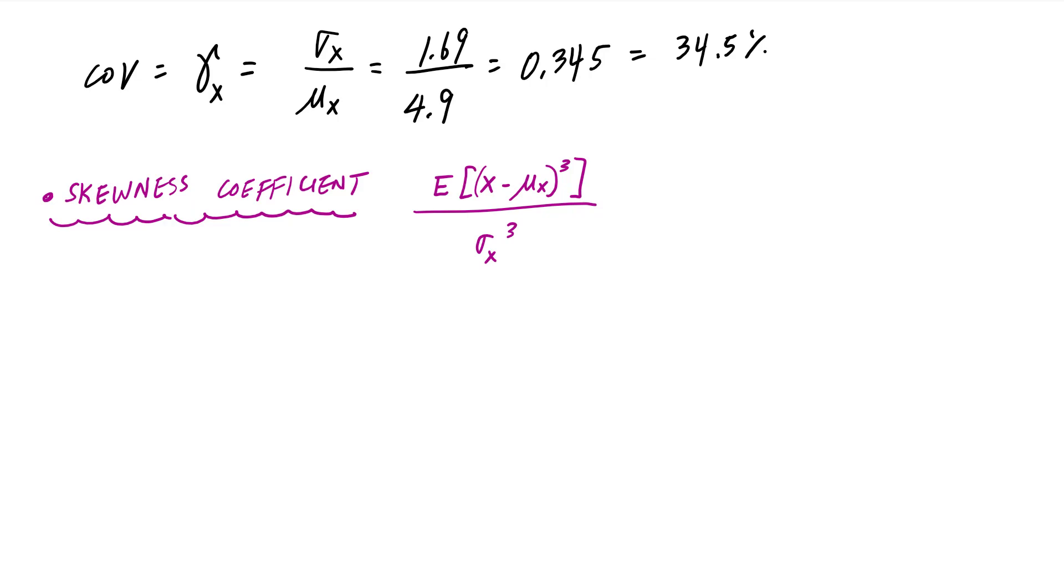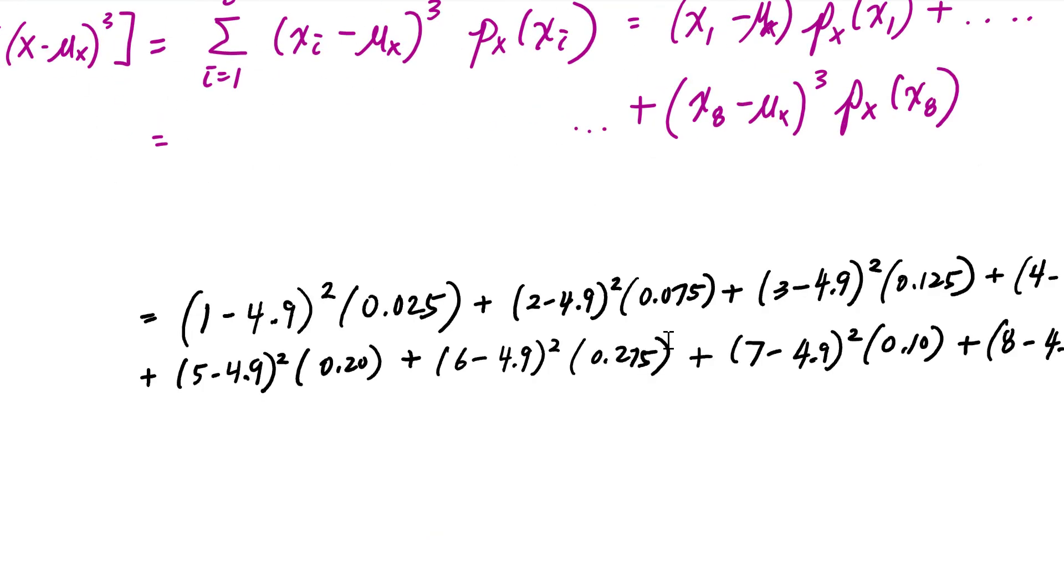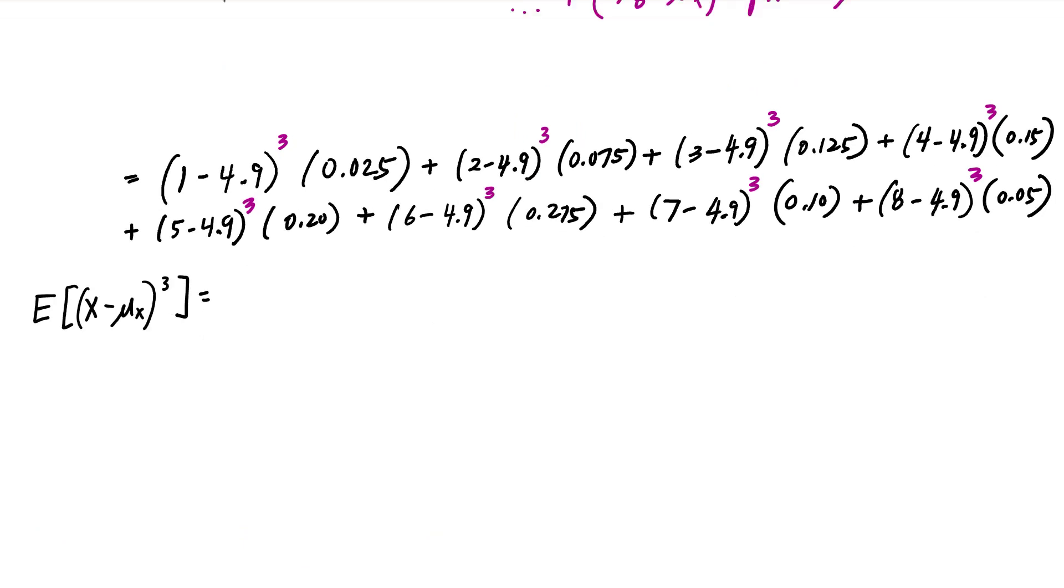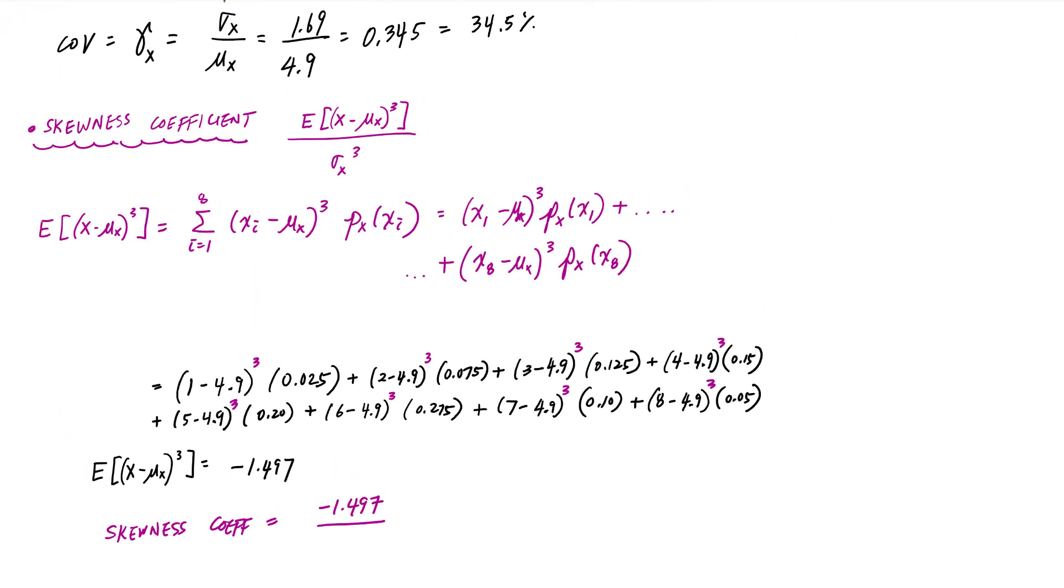And in this case here, this is a very similar calculation. The only thing that changes is that power. And this third moment about the mean is negative 1.497. And this skewness coefficient then is negative 1.497 divided by the cube of that standard deviation, which is 1.69 cubed. And this is negative 0.3128.